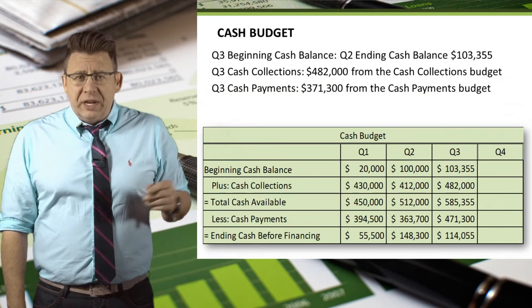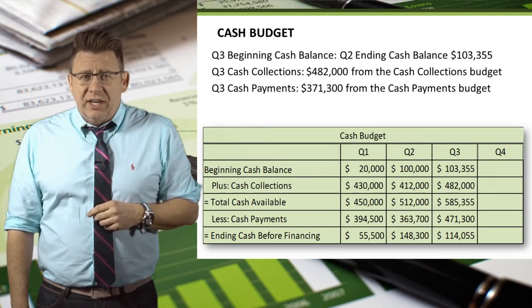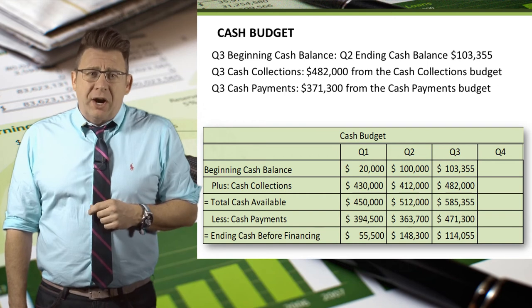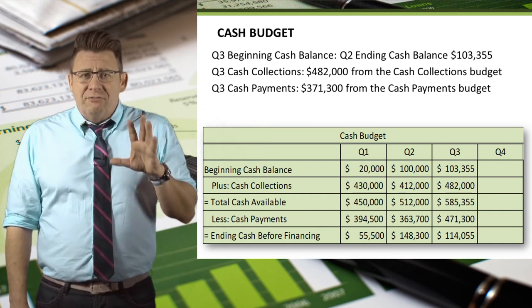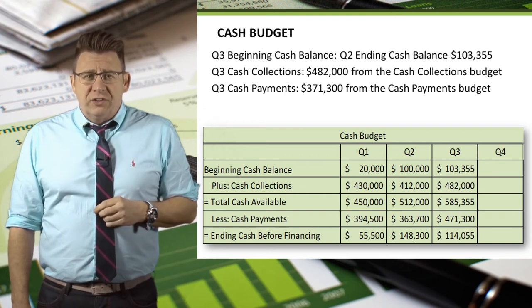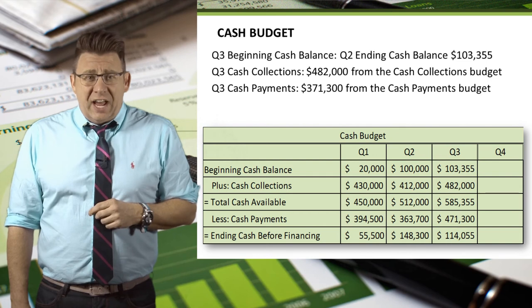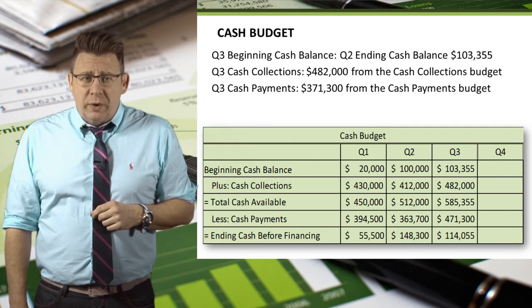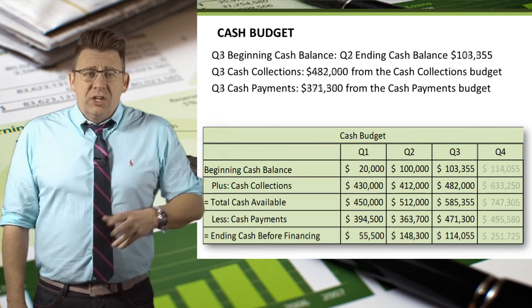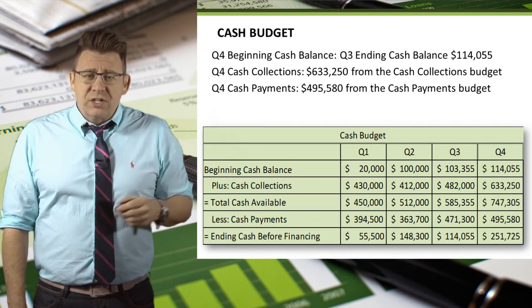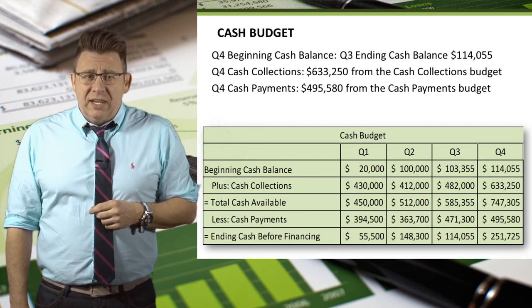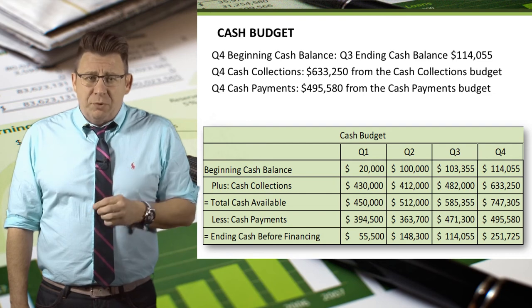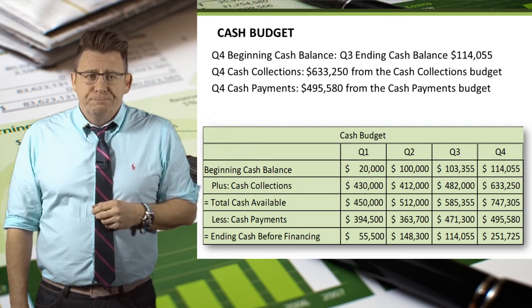Q3 is calculated the same as prior quarters. Since we have budgeted more than $100,000 of ending cash, we don't need to borrow any. Q4 is also calculated the same way as the prior quarters.